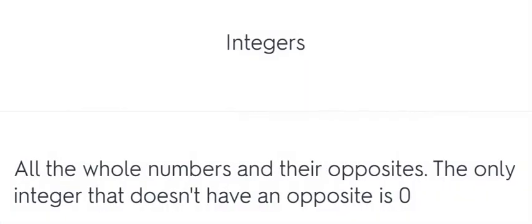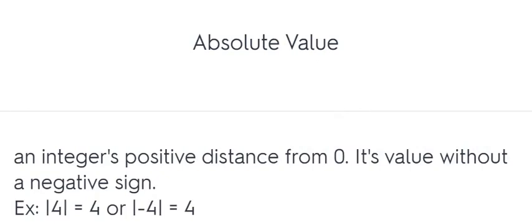Integers. All the whole numbers and their opposites. The only integer that doesn't have an opposite is zero. Absolute value. An integer's positive distance from zero, its value without a negative sign. |4| equals 4 or |-4| equals 4.